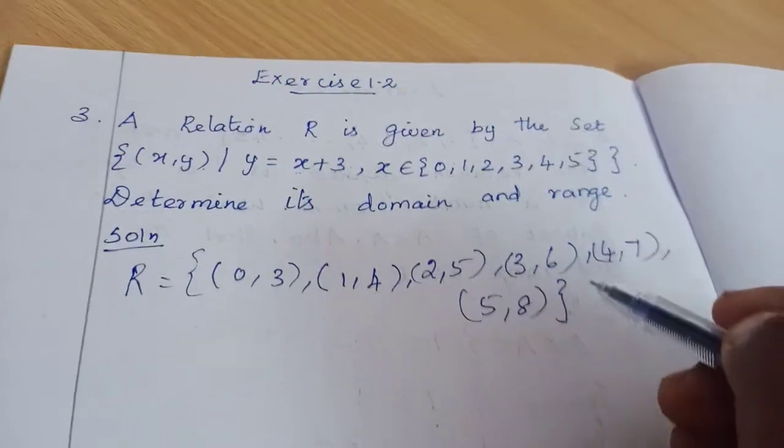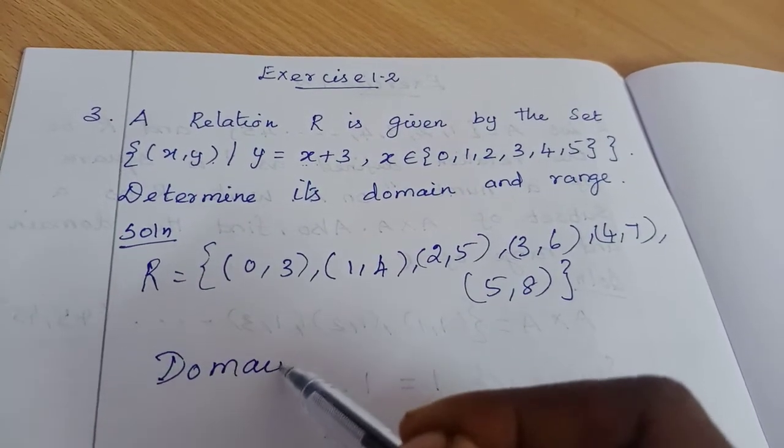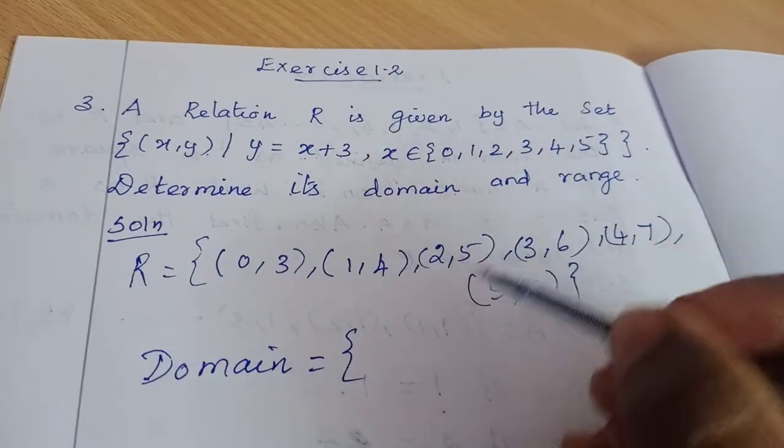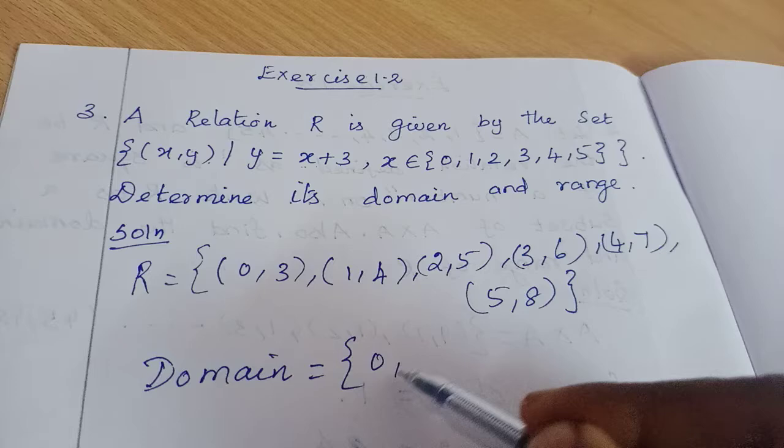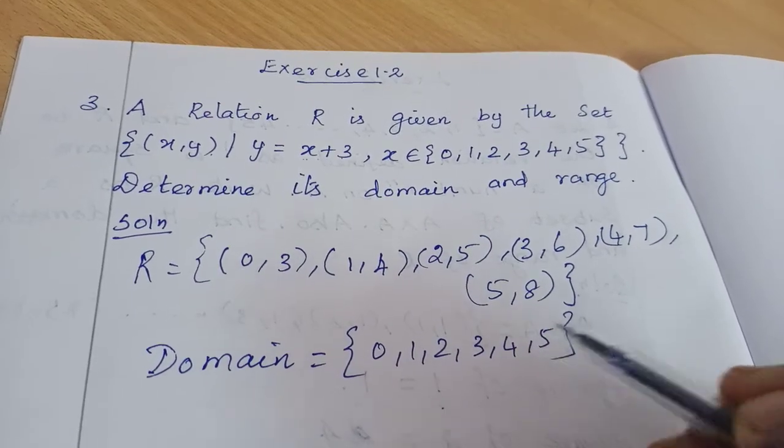Now for the domain. Domain elements are the x values, so the domain equals {0, 1, 2, 3, 4, 5}.